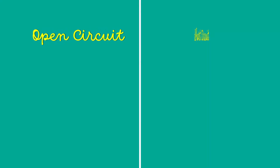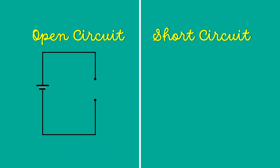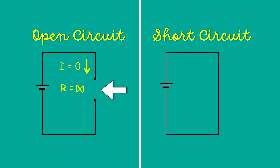Before explaining the faults, let's first see what open circuits and short circuits are. An open circuit contains a break in the circuit; therefore, the current flowing through the circuit will be zero and the resistance is infinite. A short circuit is a closed circuit with zero resistance, and an enormous amount of current flows through it.